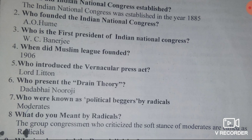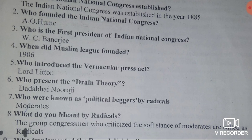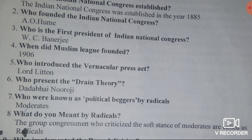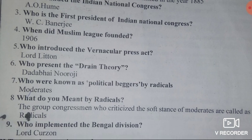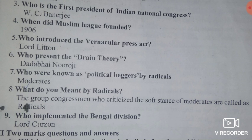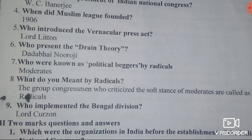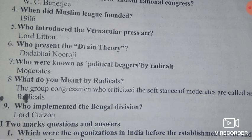Question three: who is the first President of Indian National Congress? Answer: W.C. Banerjee became the first President of Indian National Congress. Question four: when was Muslim League founded? Answer: 1906 — in that year, Muslim League was founded. Question five: who introduced the Vernacular Press Act? Answer: Lord Lytton introduced the Vernacular Press Act.